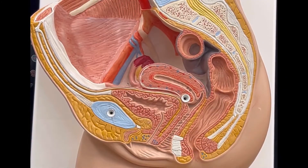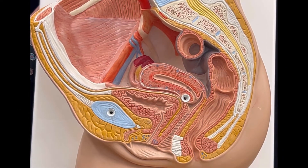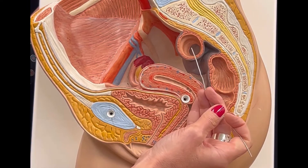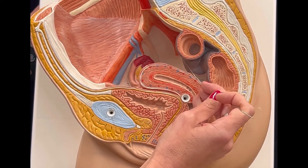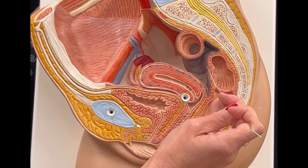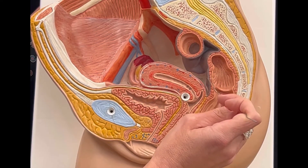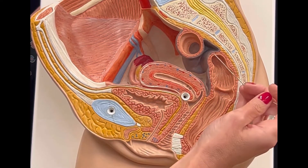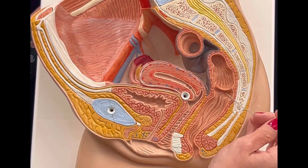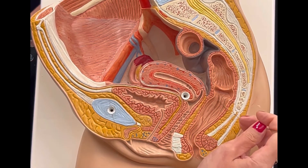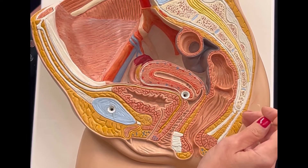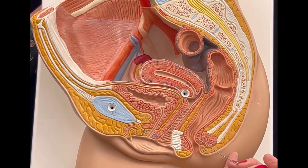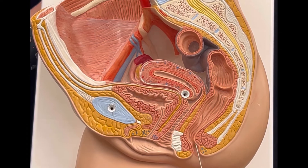After the descending colon, which we can see in the other model, then comes the sigmoid colon. The sigmoid colon is this part of the colon that looks like the letter S, so it's very easy to remember. After the sigmoid colon, we have the rectum, which is the part that goes straight down, ending in the anus.